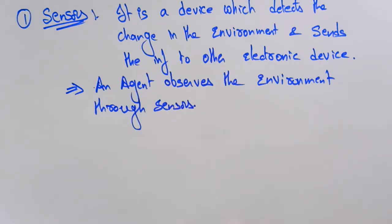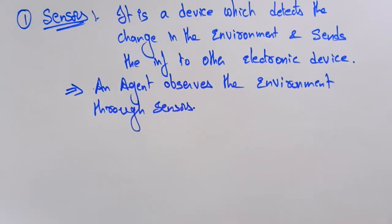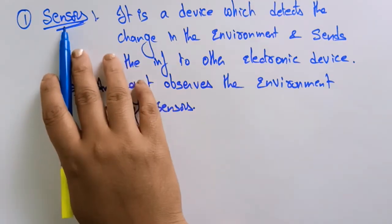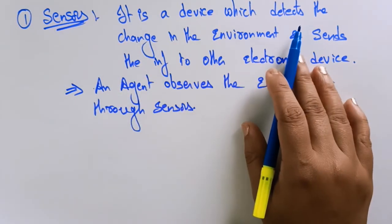A sensor is simply a device which detects the change in the environment. If you take any artificial intelligence system, that system works based on environmental conditions. How can that system identify the environment? Whatever it is able to see — because of the sensors. The sensors are present in the agent.